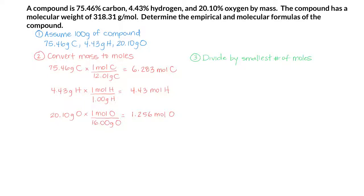To get our empirical formula, we divide by the smallest number of moles. Looking at our data, we see that 1.256 moles is the smallest, and so we will divide everything by 1.256, and that gives us 5 carbon, and 3.5 hydrogen, and 1 oxygen.